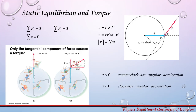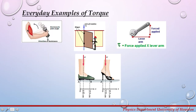Let's talk about everyday examples of torque. When you go to the gym and do curls, you lift weights and produce torque around your elbow. When you open a door, you produce torque around the hinges. When you use a wrench, you also produce torque — you apply force on this end, and this is the lever arm, the perpendicular distance. So the torque produced is equal to the magnitude of the force times the lever arm.